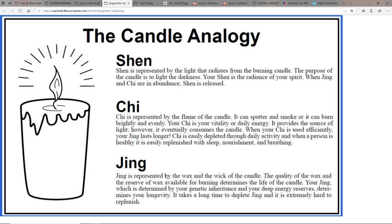Some would basically just stay chaste and not engage as well - there were different schools of thought there. Chi is represented by the flame of the candle. It can sputter and smoke or it can burn brightly and evenly. Your chi is your vitality, your daily energy. It provides the source of light however it eventually consumes the candle. When your chi is used efficiently, your jing lasts longer. Chi is easily depleted through daily activity and when a person is healthy is easily replenished with sleep, nourishment, and breathing.